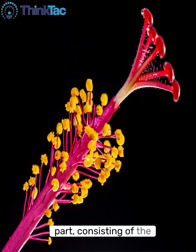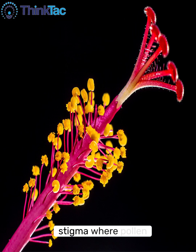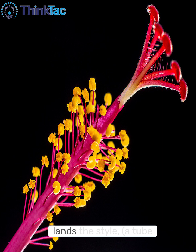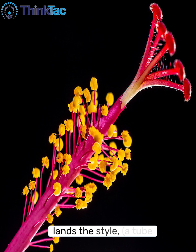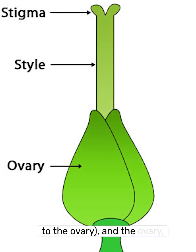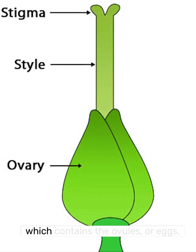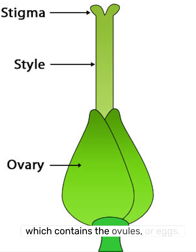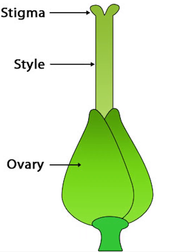The pistil is the female part, consisting of the stigma, where pollen lands, the style, a tube connecting the stigma to the ovary, and the ovary, which contains the ovules or eggs.